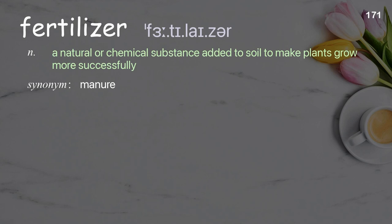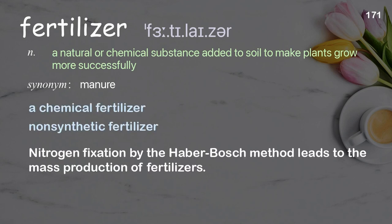Fertilizer: a natural or chemical substance added to soil to make plants grow more successfully. Examples: a chemical fertilizer; non-synthetic fertilizer. Nitrogen fixation by the Haber-Bosch method leads to the mass production of fertilizers.